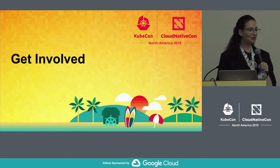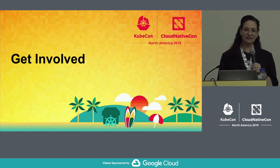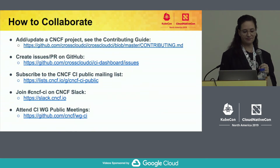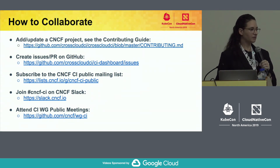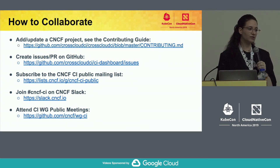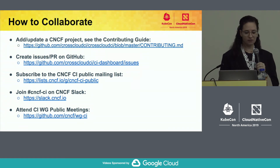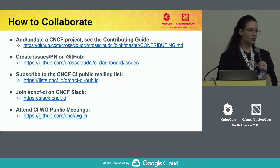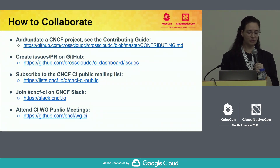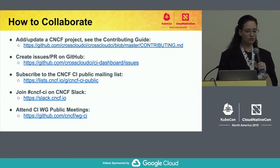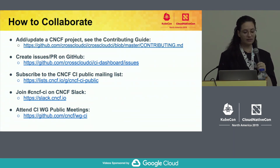We definitely welcome your feedback and collaboration. There are several ways that you can get involved. We're ready to add the graduated and incubating projects on the CrossCloud CI repo. We have repos set up for all the graduated and incubating projects, so please see the contributing guide to get started. We welcome your pull requests or issues if there's any issue or question you may have. You can also subscribe to the mailing list, join the Slack group, and attend the CI working group calls.